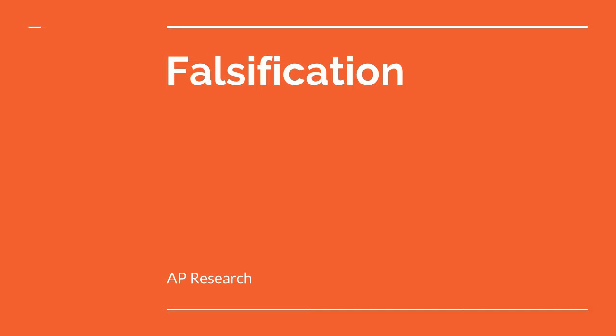Welcome back for more AP Research. This week we're going to deal with falsification — meaning you're lying about stuff. Not necessarily lying about your sources, so it's not plagiarism. This is a different level of lying.